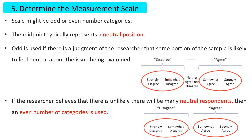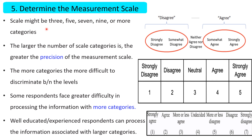For example, when using a five-point scale: strongly disagree, somewhat disagree, neutral (neither agree nor disagree), somewhat agree, strongly agree. If the researcher believes there will be few neutral respondents, an even number category is used, such as strongly disagree, somewhat disagree, somewhat agree, strongly agree — with no neutral position. It is up to the researcher's judgment to determine either even or odd number categories. Most researchers use odd number categories: three, five, seven, nine, or eleven.